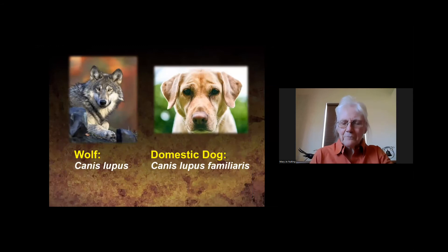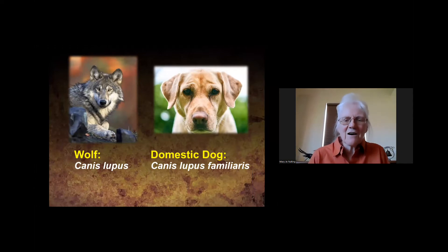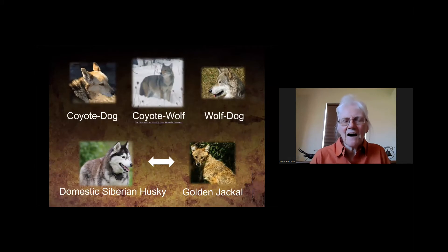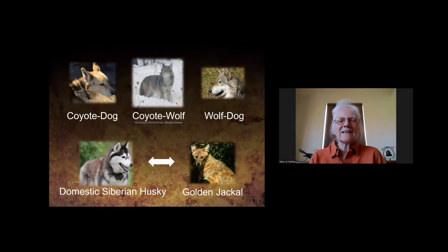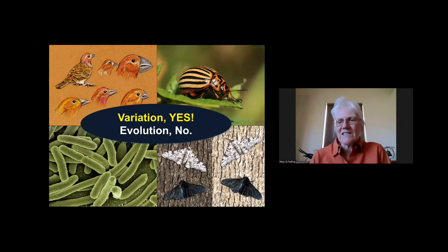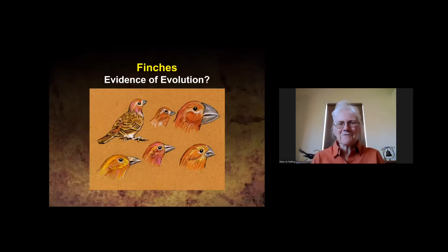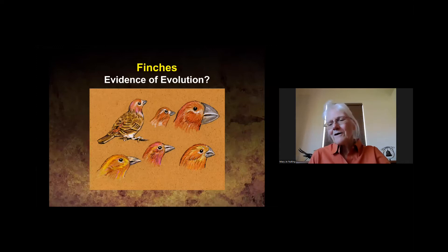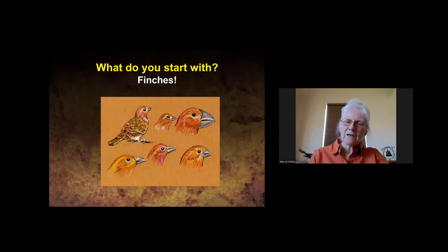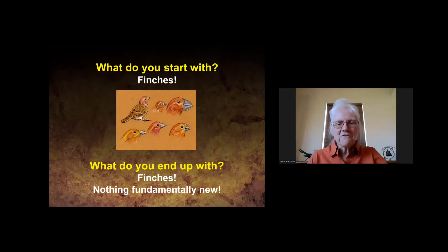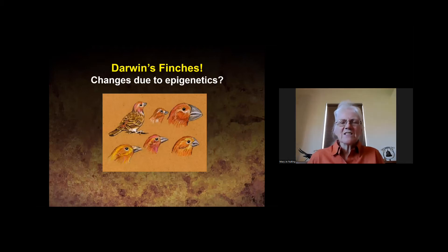With dogs, we have wolves and domestic dogs, but they're the same basic kind of creature and can interbreed, so we believe these were the same created kind in Genesis. Variation yes, but evolution no. With finches — what do you start with? Finches. What do you end up with? Finches. Nothing fundamentally new. You see some minor variations, yes.